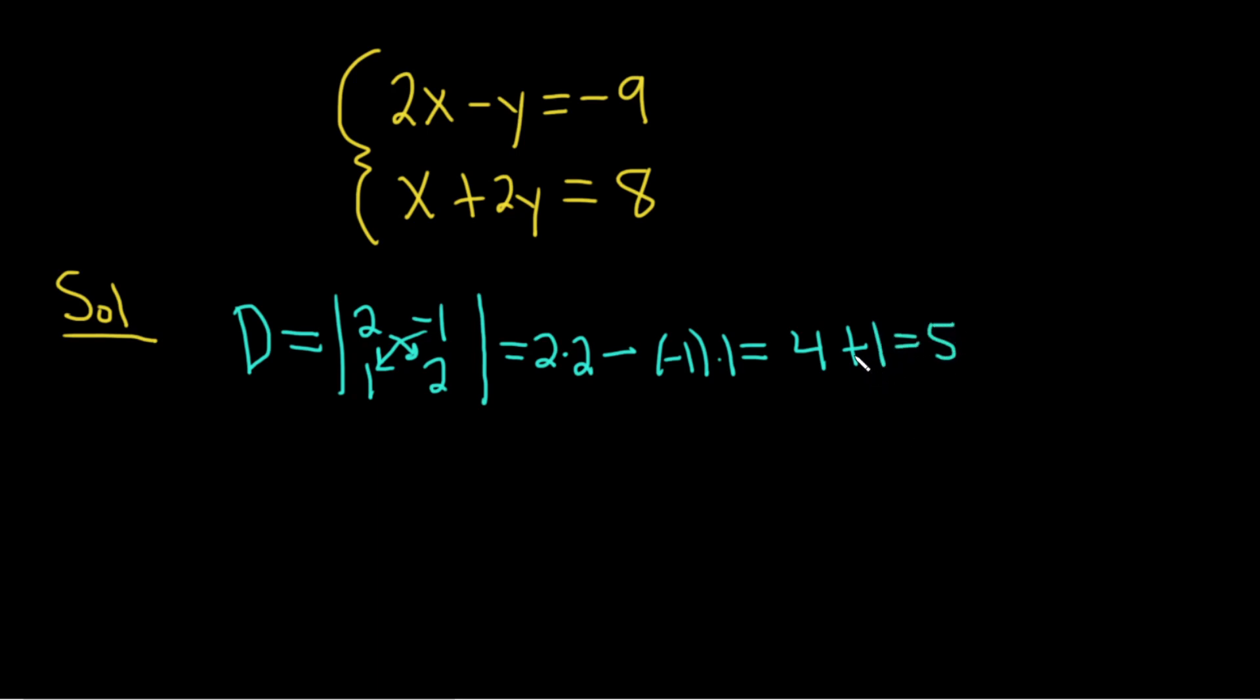So Big D is equal to 5. Again, it's always just the coefficients here of your x's and your y's. The next step is to find Big D sub x. To find Big D sub x, you look at this column here, the 2 and the 1, the x columns,